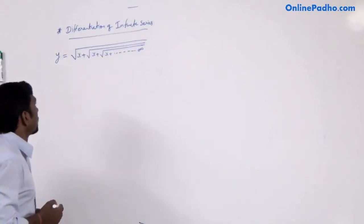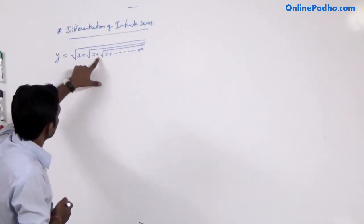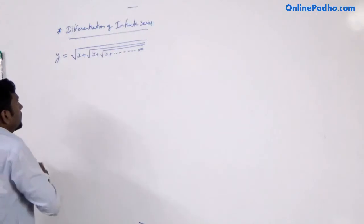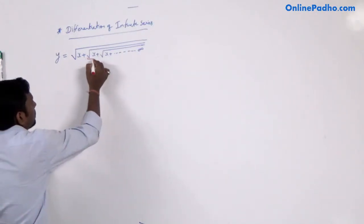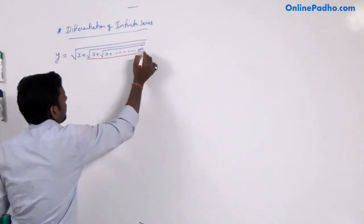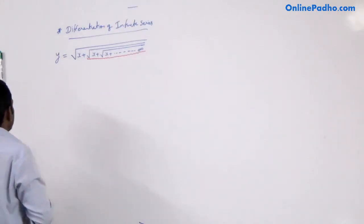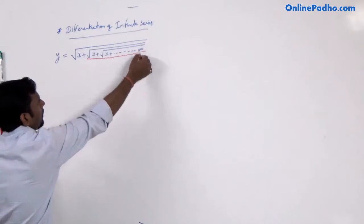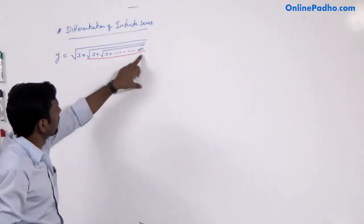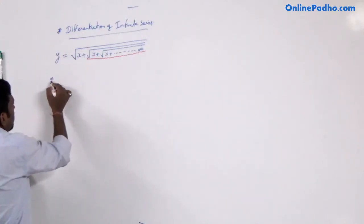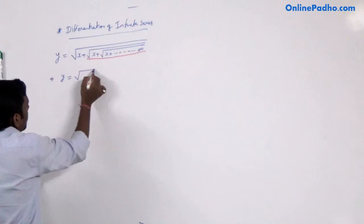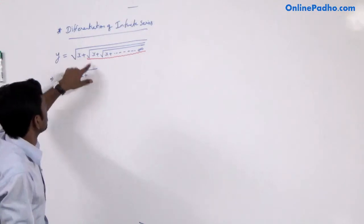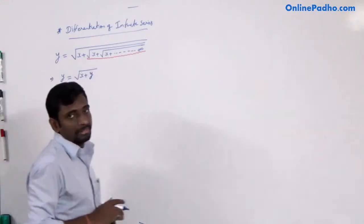First of all, you know that root x plus root x plus root x plus root x and so on up to infinite is called y. So this root x is repeated from term 1 onward. This complete inner term can also be written as y, because it is the same given function. Since there is no end to the infinite series, this term can again be written as y. Therefore, it can be written as y equal to square root of x plus y.